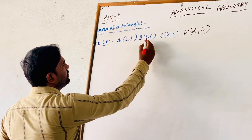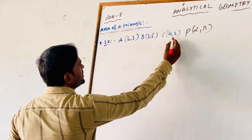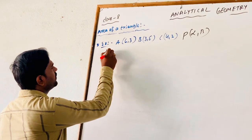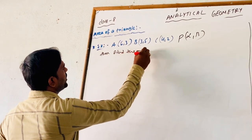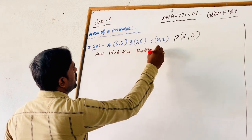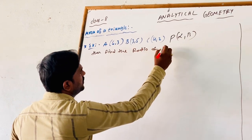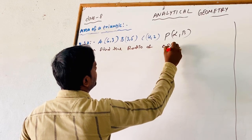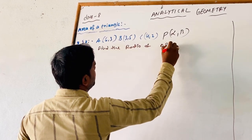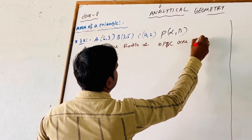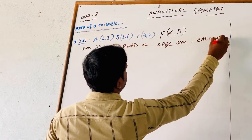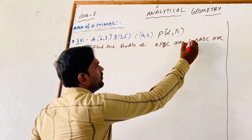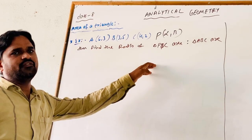Given: A(6,3), B(3,5), C(4,2), and P(α, β). Find the ratio of triangle PBC area to triangle ABC area. Here we are using the area of a triangle formula, and we will find the areas of these two different triangles.